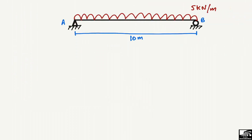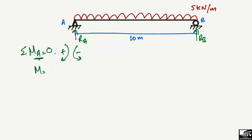For Method 2, we use the equilibrium equation: summation of moments at point A equals zero, with clockwise moments taken as positive and anti-clockwise as negative. The first force creating a moment is the UDL of 5 kN per meter. We convert it to a concentrated point load: 5 kN/m multiplied by 10 meters equals 50 kN, acting at the center of the beam.